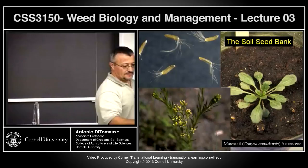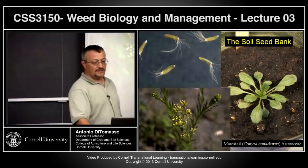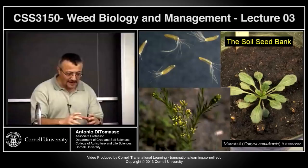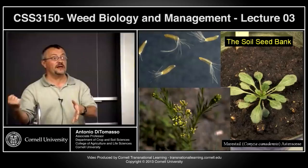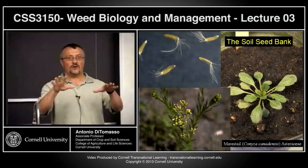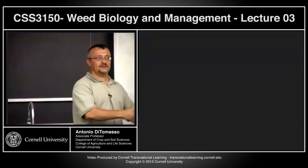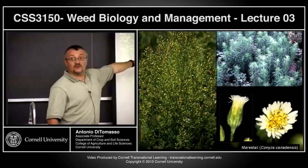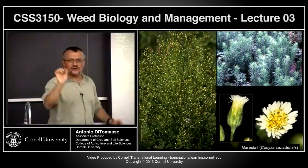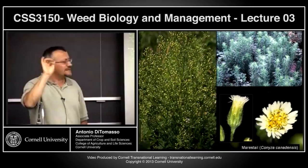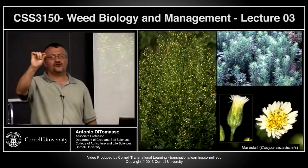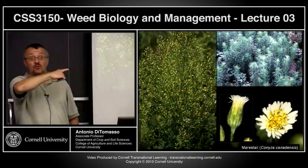Mare's tail — Conyza canadensis — can be a summer annual or winter annual. I actually have some of the rosette in my garden; it germinated probably in July or August, is now about that size, and next spring before I can do something it will probably have already set seed. It can get up to this high. It's called mare's tail or horse tail because the flowers look like tiny asters — white, very small. Thousands of seeds, like miniature milkweed seeds flying — that's why this plant is so problematic.